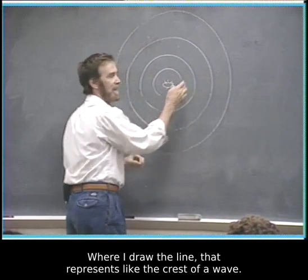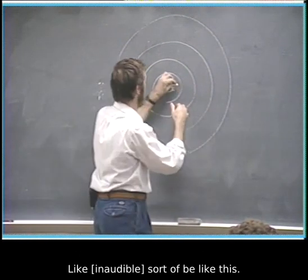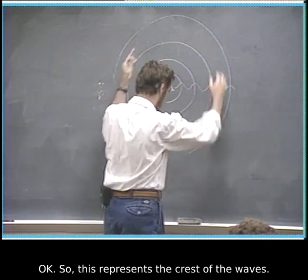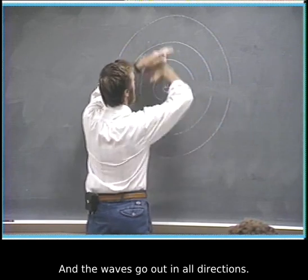Where I draw the line, that represents, like, the crest of a wave. Like, it might sort of be like this. You kind of see what I'm saying? So this represents the crest of the waves. And the waves go out in all directions.